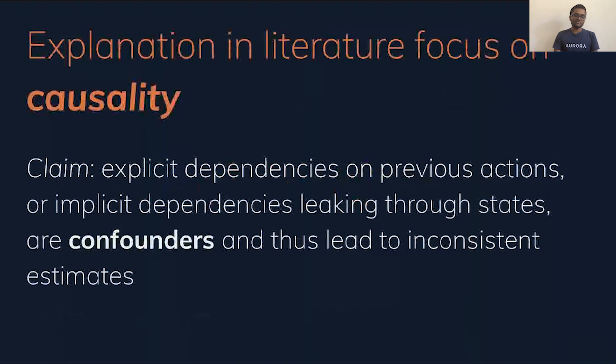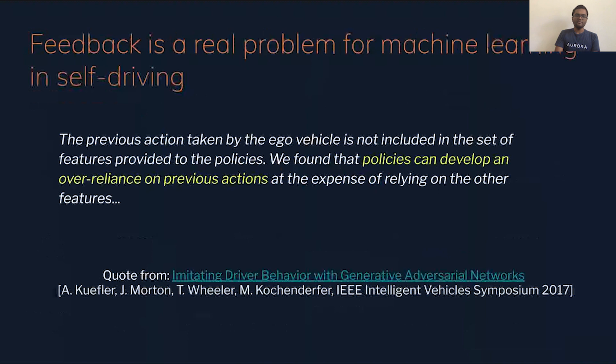And one thing we've seen in the literature more recently is this claim that this is related to confounding in causality, or causal confounding, as it's called in statistics literature, which is that the dependencies on our actions and states are coming through as confounders in our problem, where we are unable to learn the true causative nature because of confounding.